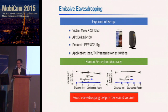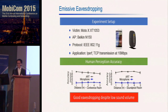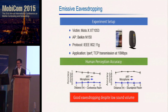We verified our emissive ART design using a Motorola X smartphone as the victim device, communicating with a nearby access point running an iPerf application initiating TCP transmission at 10 Mbps. In the emissive case, since the volume of the smartphone is much lower than a computer loudspeaker, even one meter away testers cannot hear anything. But with the ART approach, testers can recognize the sound with more than 90% accuracy.